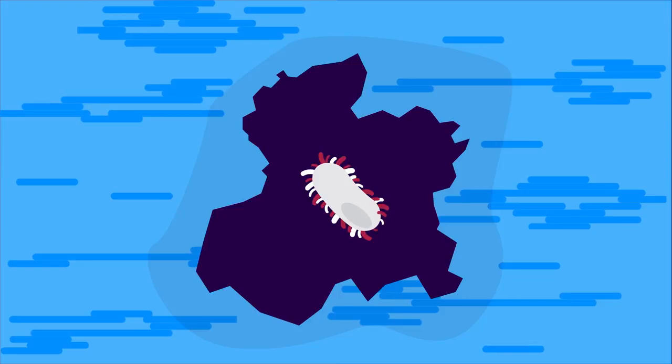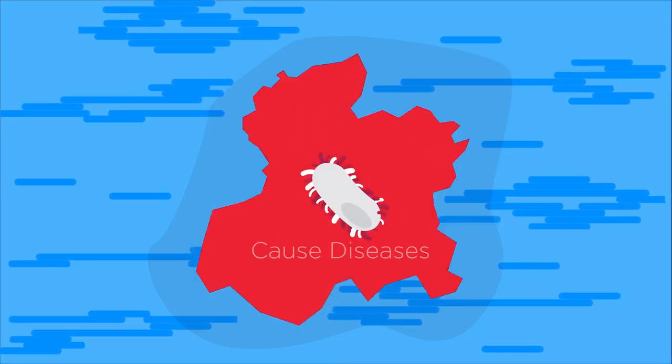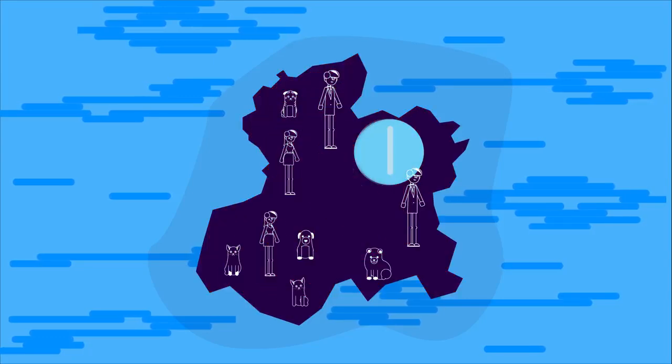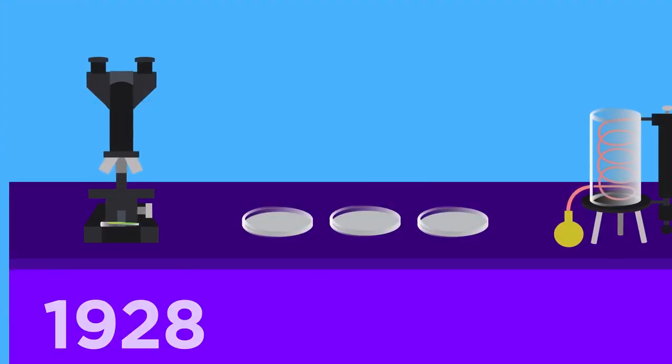Bacteria are single-celled organisms which can be pathogenic. That means that they can cause disease in humans and animals, and antibiotics can be used to treat these diseases.